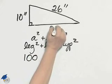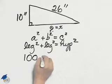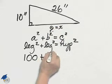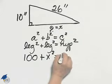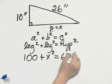For the question mark, I'm going to let that be x, so plus x squared. Now, 26 squared is 676.